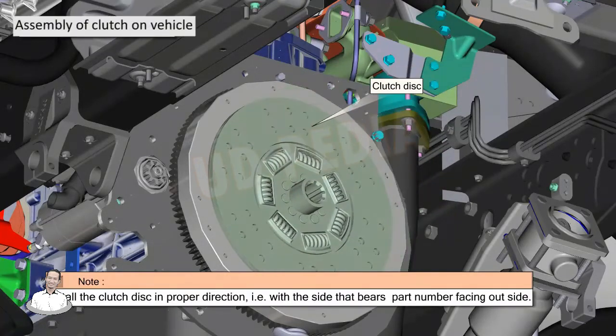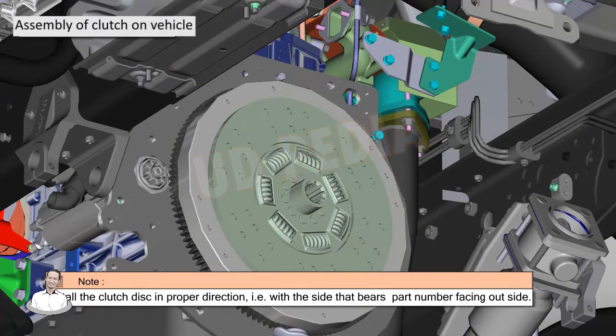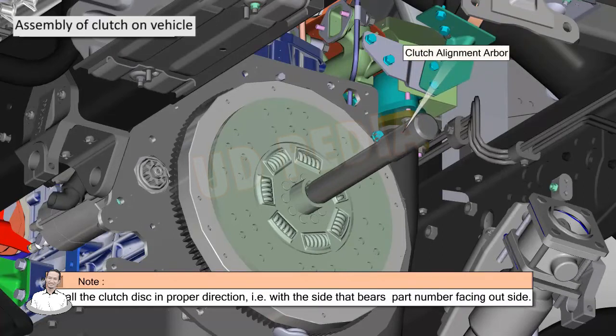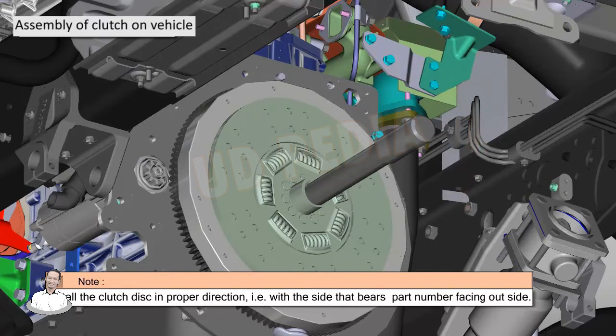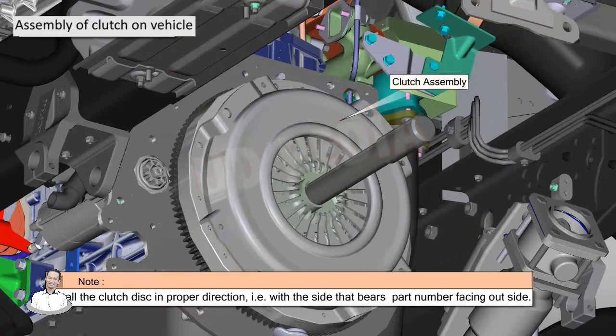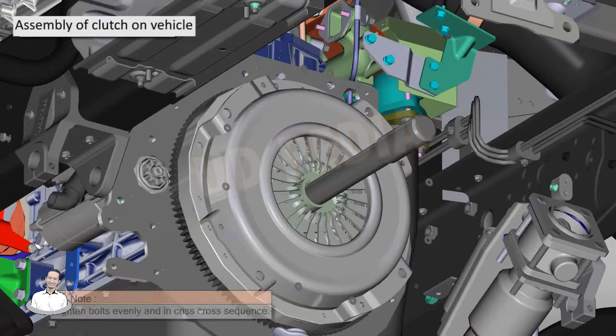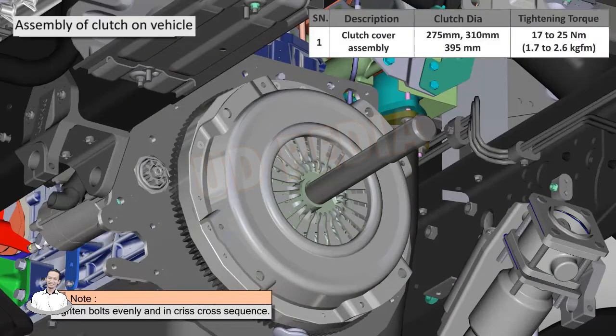Install the clutch disc in the correct direction, with the side that bears the part number facing outside. Install the clutch alignment arbor to support the clutch disc. Now place the clutch cover assembly and tighten the bolts in a criss-cross sequence.